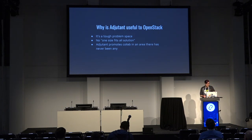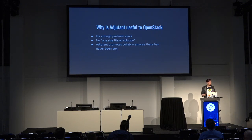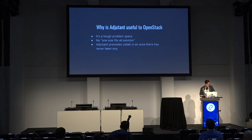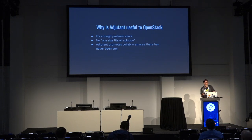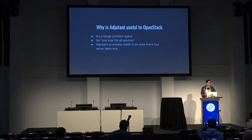Why is Adjutant useful in OpenStack? The problem we're trying to solve is a tough one, purely because there is no one-size-fits-all solution. It's a wide, varied, overly complicated problem. Every company is different and has different requirements. That's why our goal with Adjutant wasn't to make a perfect solution — there just isn't one. In fact, nothing has been built in this space because everyone's been trying to create the perfect solution when that isn't really a way forward. So instead, what we tried to do was create the least awful solution. It sounds counterintuitive, but it's better than nothing, and at least it means we've got a place now to collaborate.